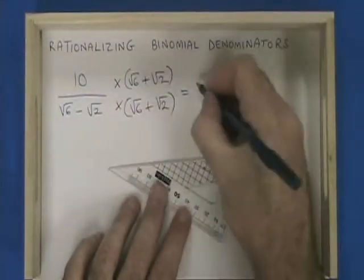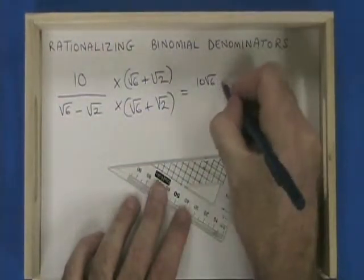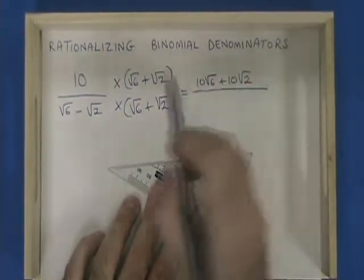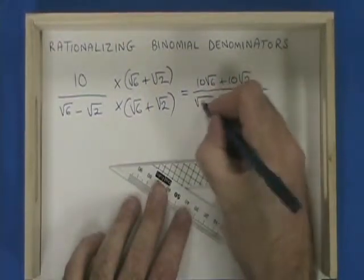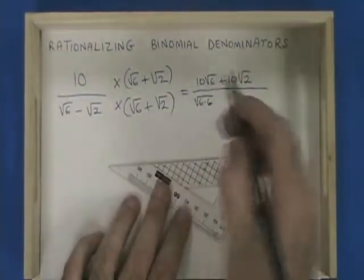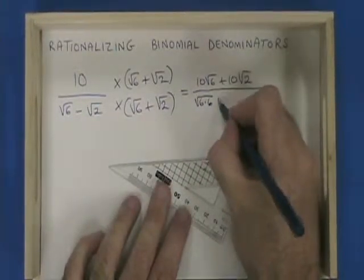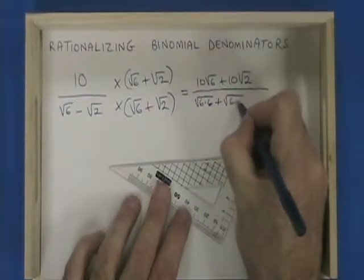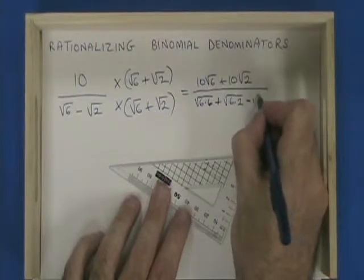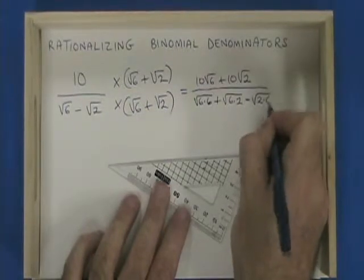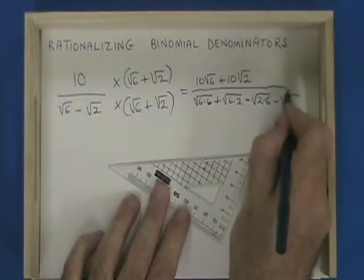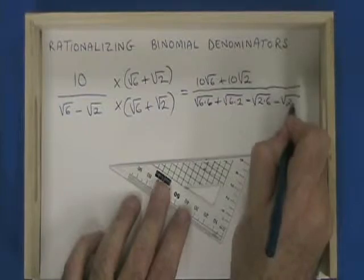10 times root 6 is 10 root 6. 10 times root 2 is plus 10 root 2. Root 6 times root 6 gives us root of 6 times 6. Root 6 times root 2 gives us plus root of 6 times 2. Negative root 2 times root 6 gives us minus root of 2 times 6. And negative root 2 times positive root 2 gives us negative of root 2 times 2.